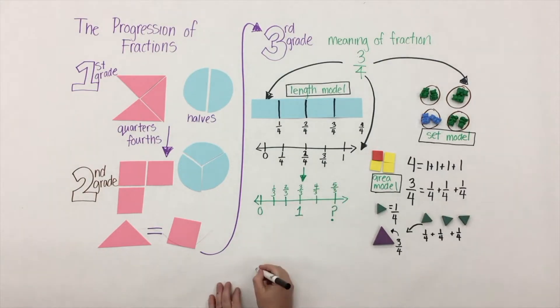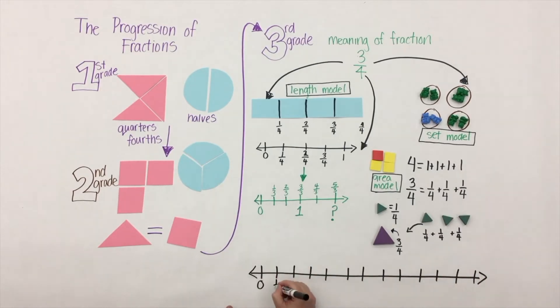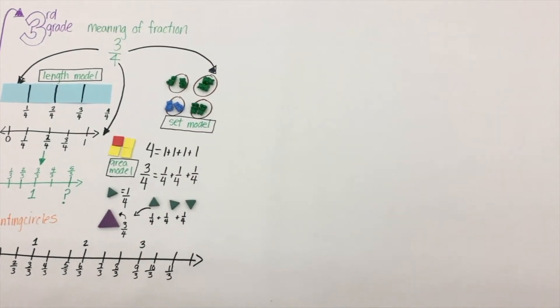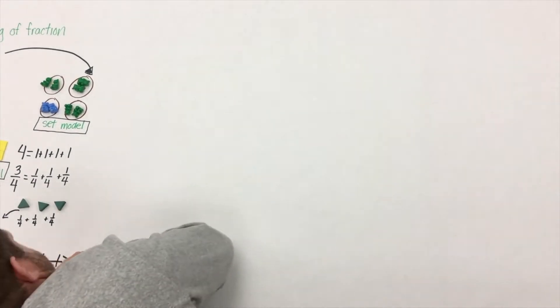It's the sum of unit fractions, so we might want to get students to begin counting with fractions: one-third, two-thirds, one, four-thirds, five-thirds, two. Let's get our students counting by fractions. Counting circles are a great tool to get students understanding and seeing the sum of unit fractions and that repetition and the structure of numbers.